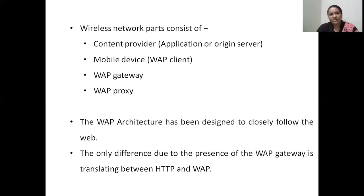The wireless network contains four parts basically. One is the content provider, which is the application server — also called the origin server or WAP server. The second is the mobile or handheld devices, called WAP clients, which make use of data on the WAP server. The third is the WAP gateway, and the fourth is the WAP proxy. The WAP architecture is designed closely to make it more suitable for web or internet usage. The only difference due to the WAP gateway is a translation between HTTP and the wireless application protocol, so that the wired domain connects to the wireless domain easily.